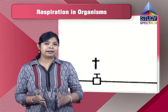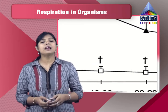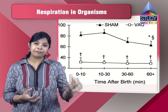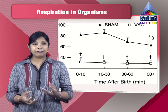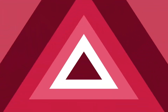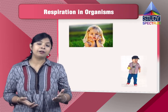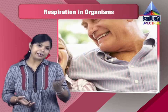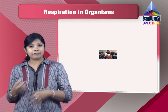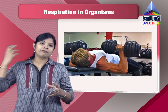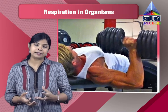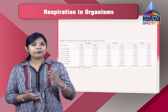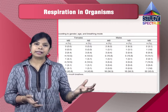Breathing rate also varies according to age. New born babies have a breathing rate of 50 to 56 times per minute. Boys or girls have a breathing rate of about 25 times per minute. Adults breathe 15 to 18 times per minute. But if we do heavy exercises, it changes and can reach up to 50 to 56 times per minute. So breathing rate varies according to age and physical activities.